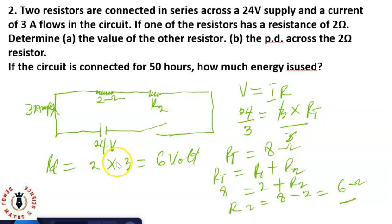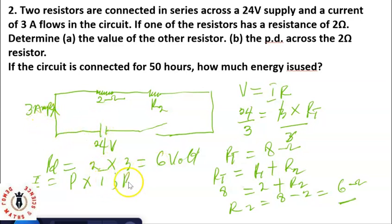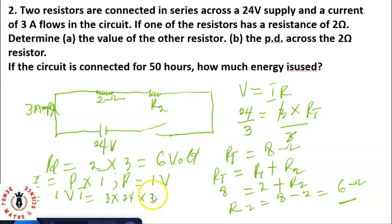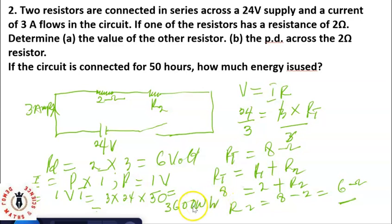Lastly, if the circuit is connected for 50 hours, how much energy is used? Energy equals power times time, and power P equals IV. So energy equals I times V times t, which is 3 times 24 times 50, giving 3600 watt-hours. Converting to kilowatt-hours, that is 3.6 kilowatt-hours.